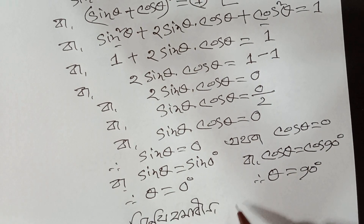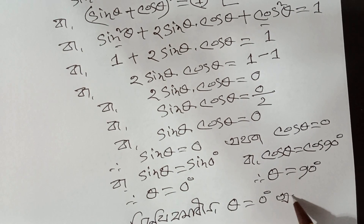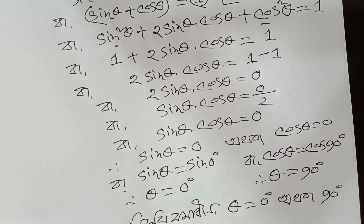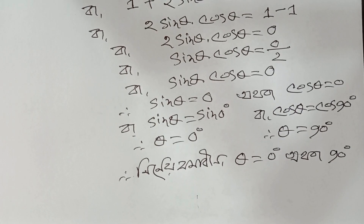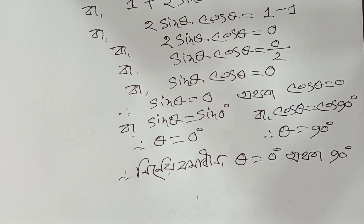So theta equals 0 degrees or 90 degrees. That is the answer for this number. We are finishing today's session. Whatever is remaining we will solve slowly on the next page. Please subscribe to the channel and the channel will come. Today up to this point.